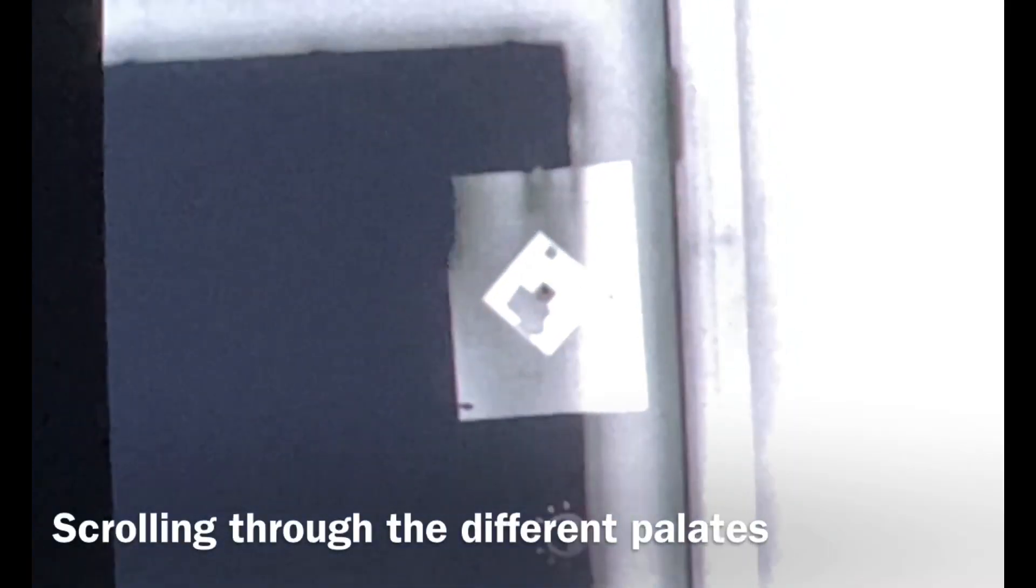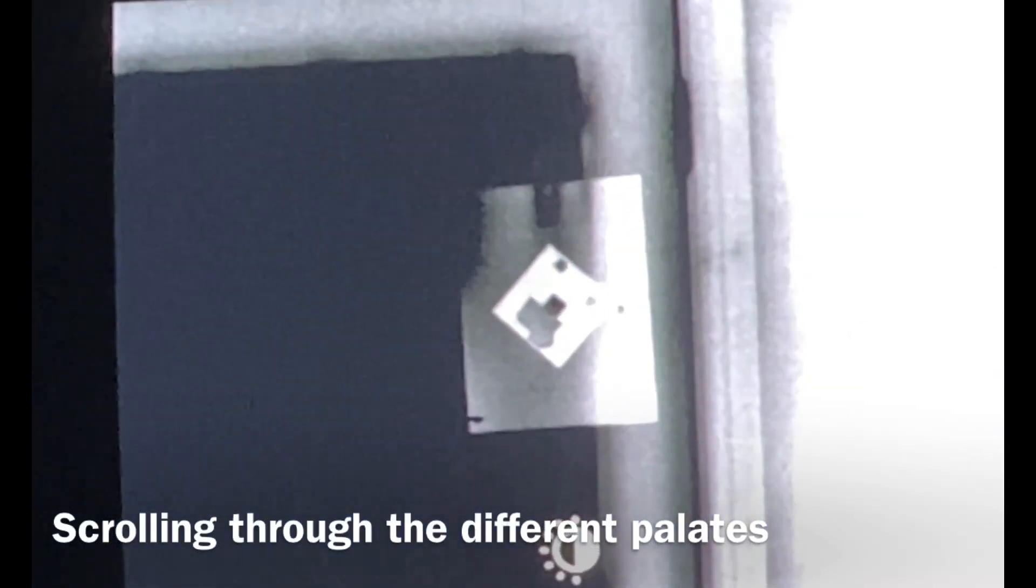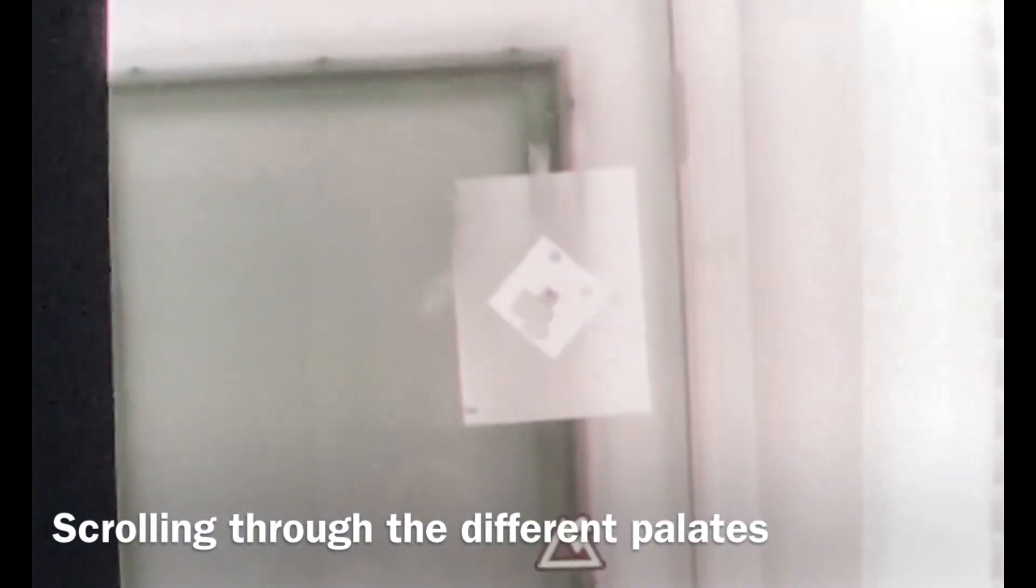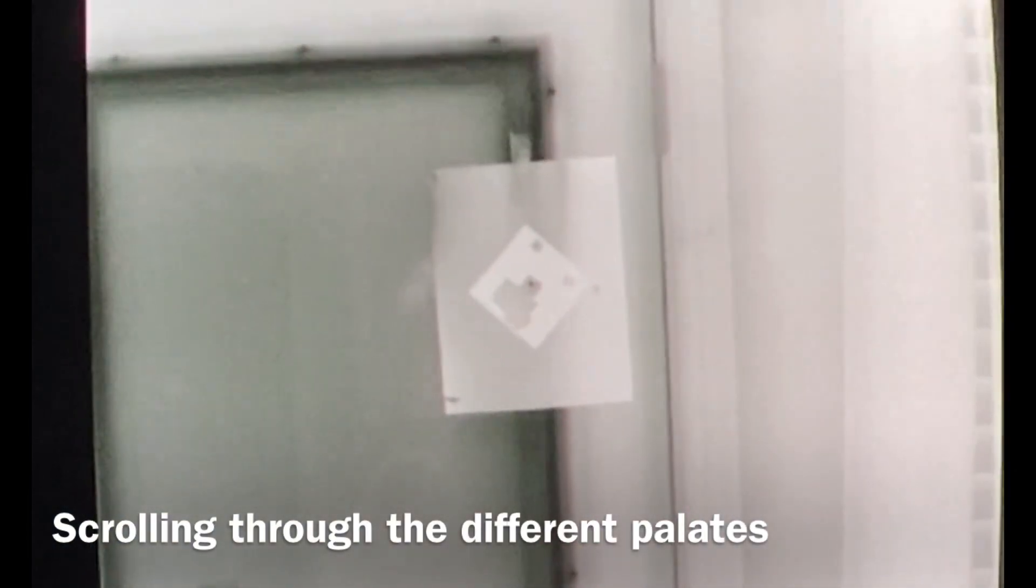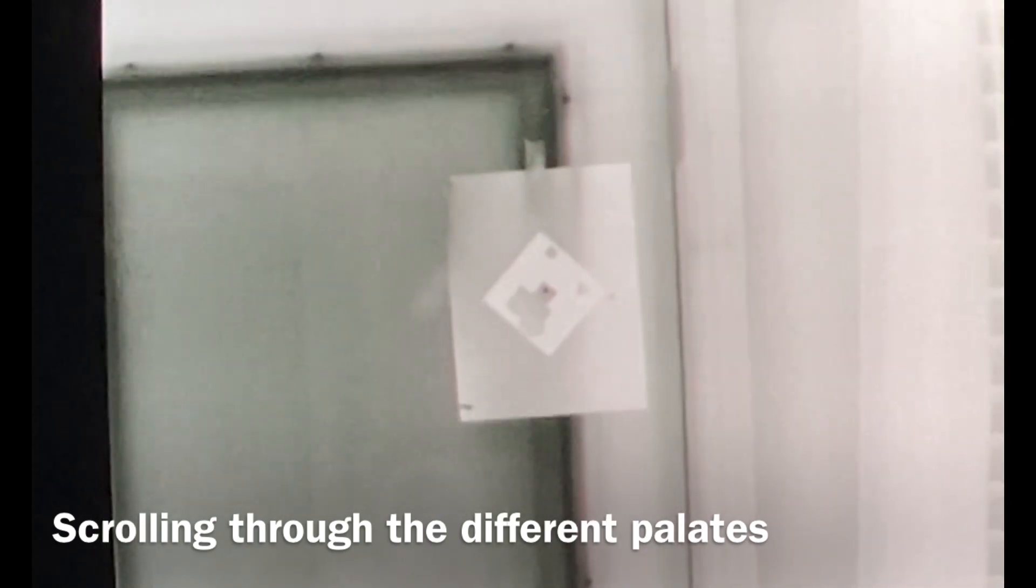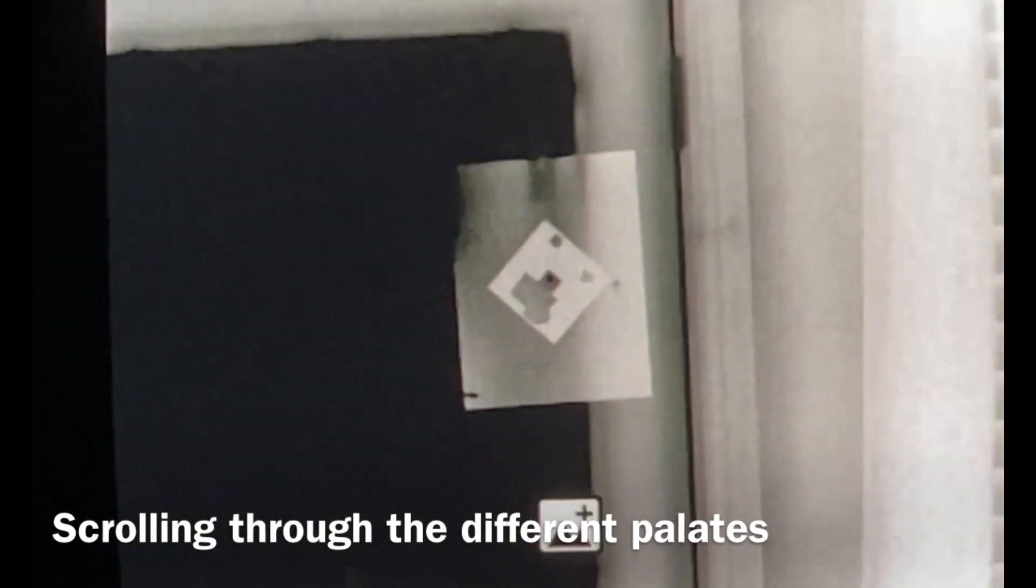All right. So the different shades there, you can still see that it's still a viable target. Even scrolling through the different templates. Now where I put the duct tape patches, you can see those, but